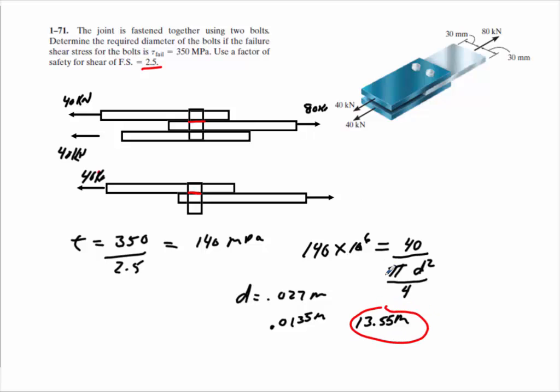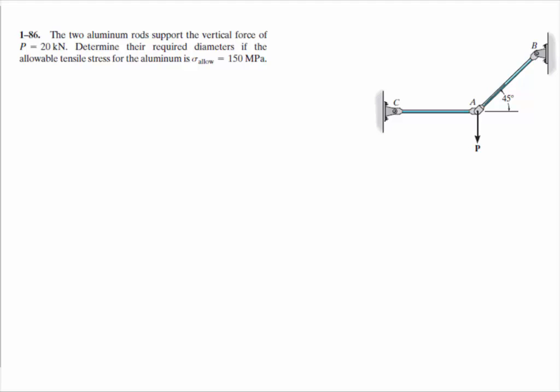Okay, that's how I would work that problem. Now again, you can take the 80 and look at it that way. And then you're going to have a bolt in double shear, but your load's double and you'll get exactly the same answer. All right, let's look at one more. This is 1-86. Here you have two aluminum rods to support a vertical load of 20 kilonewtons. Determine the required diameters if the allowable tension for aluminum is 150 megapascals.